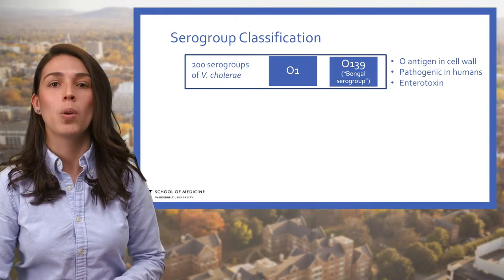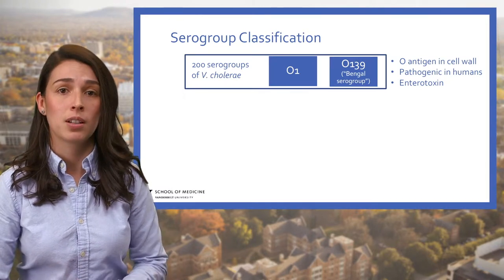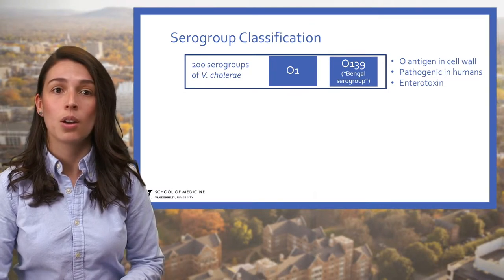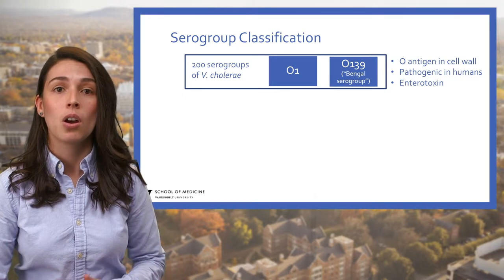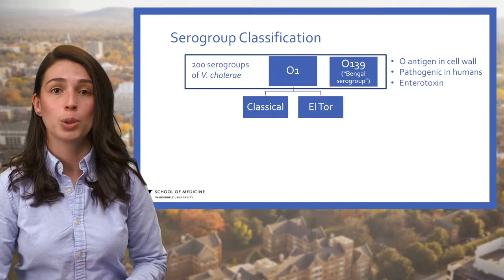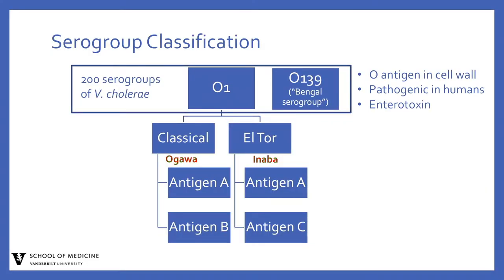Pathogenic O1 and O139 have the ability to produce cholera toxin, a type of enterotoxin that affects the intestinal cells. Pathogenic organisms in the O1 serogroup have caused the majority of cholera outbreaks and are subdivided into two biotypes: classical and El Tor. These two biotypes each contain two serotypes called Inaba and Ogawa, differentiated based on their biochemical properties, namely their expression of specific antigens. Inaba and Ogawa both express a common cholera antigen known as the A antigen; however, only Ogawa expresses cholera antigen B and only Inaba expresses cholera antigen C.